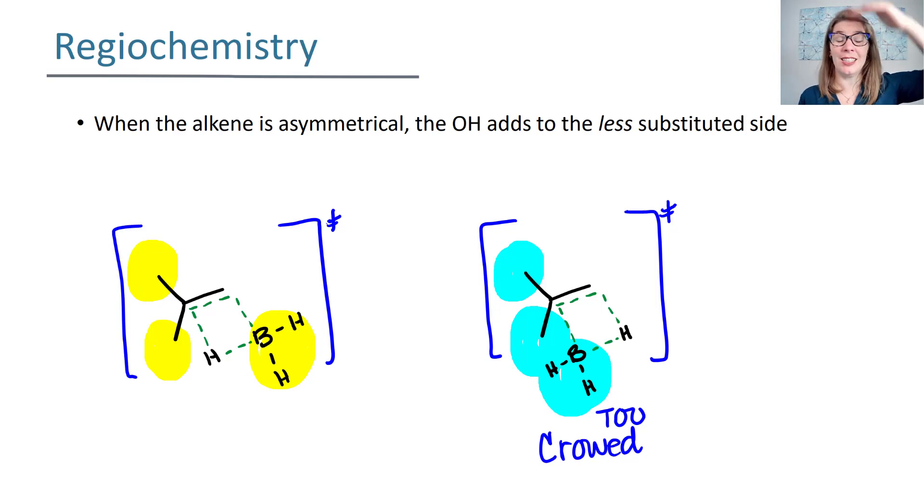So when you have a too crowded transition state that means we're increasing steric hindrance which means we're increasing energy which means we're increasing the difference in energy between the transition state and the starting materials. And what does that mean? An increase of energy of activation. So your hill to make this happen is too high and that's why your BH2 adds to the less substituted side. So this is not going to form and instead you are going to have your BH2 add to the less substituted side because it leads to a less hindered and thus more stable transition state.